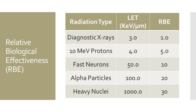As you can see in this chart, the LET, or linear energy transfer, of each type of radiation is listed in the left column, and when you compare it to the RBE in the right column, there is a proportional relationship. As the energy deposited in the tissue increases, the relative biological effectiveness increases as well.